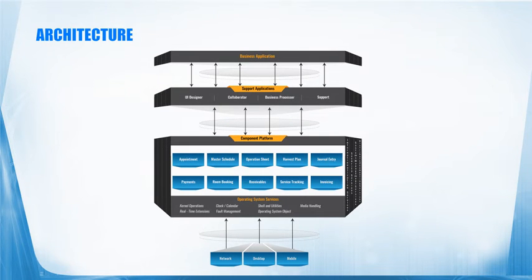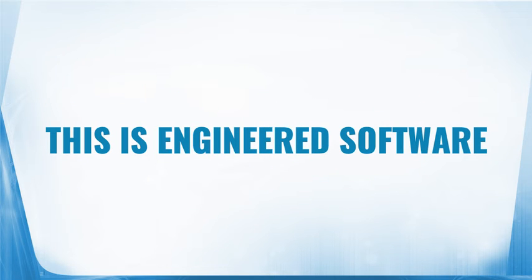Now, what is the architecture of an engineered software? An engineered software may be a business application, a support application like a user interface designer, a business processor, a collaborator, or a component platform which embeds all the components — such as master schedule, appointment, harvest plan, journal entries, room booking, receivables, invoicing, and many other components. But it should be operable in any operating system, network, desktop, and most importantly mobile phones, because today is a smartphone era. This is what we term as an engineered software.